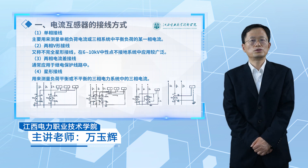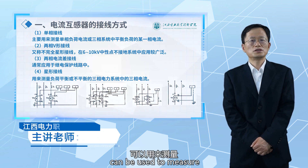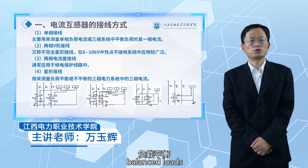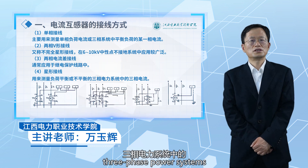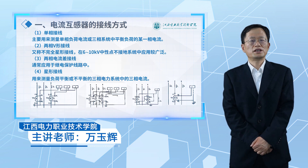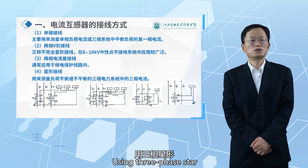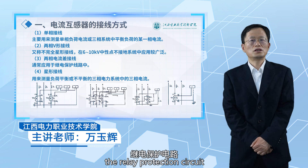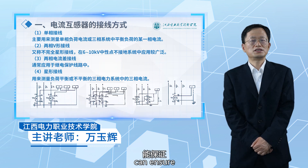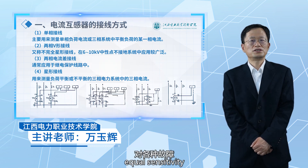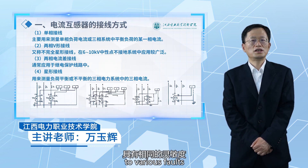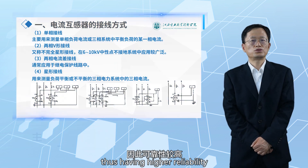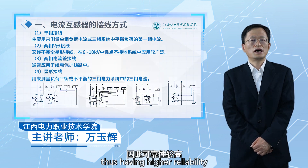The fourth is star wiring. This wiring can be used to measure balanced or unbalanced three-phase power system currents. Using the three-phase star wiring method, the relay protection circuit ensures equal sensitivity to various fault types, thus having higher reliability.